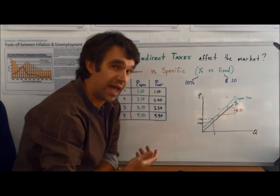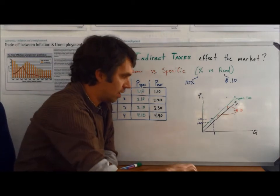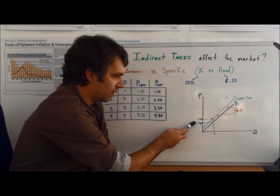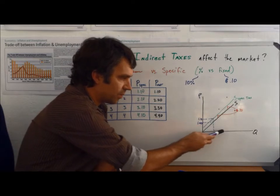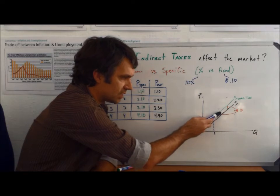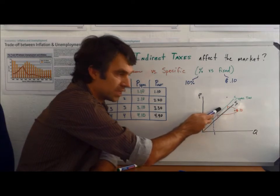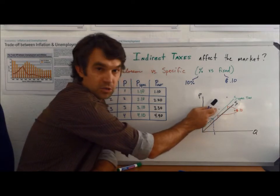With an ad valorem tax, we're going to have a different effect. Our first shift at $1, it's still going to go up to $1.10. But when we go over to $2, instead of it being a shift of $0.10, now it's going to be $0.10 plus $0.10, here to $2.20.